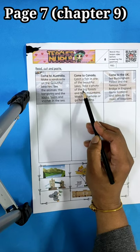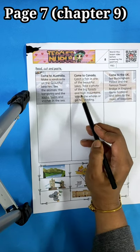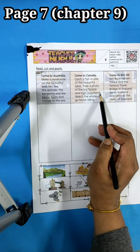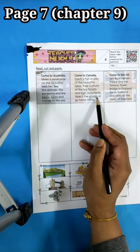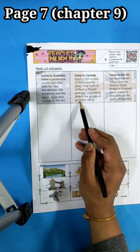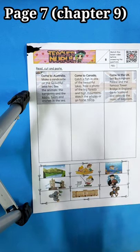Big forest and high mountains. High mountains. Watch the whales or go horse riding. Very good.